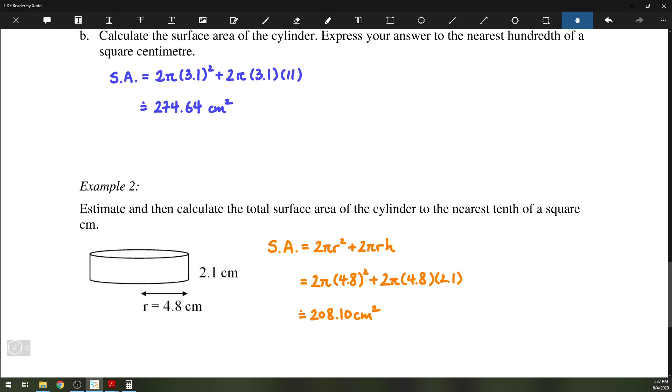So just the one formula today, 2 pi R squared plus 2 pi R H. And that is for the surface area of a cylinder. That's it for today. Thank you for listening.